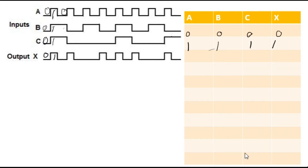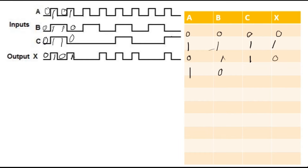Now the next clock: this is 0,1,1 and output is 0. So A=0, B=1, C=1, and you are getting output 0. Next combination is 1,0,0 and you are getting output 1. So A=1, B=0, C=0, and output is 1. Next, A is 0, B is 0, C is 0 — all zeros, output is 0.